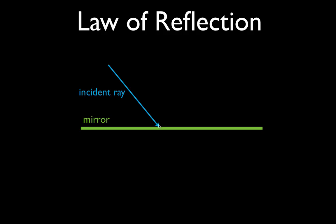Before we can draw the reflected ray, we have to draw a very special line called the normal line. The normal line is perpendicular to the mirror — it makes a 90-degree angle with the mirror. Normal means perpendicular. You'll need your protractor to draw the normal line perpendicular to the mirror. It is drawn right where the incident ray strikes the mirror — not somewhere else — so the mirror, the incident ray, and the normal line all meet at one point.